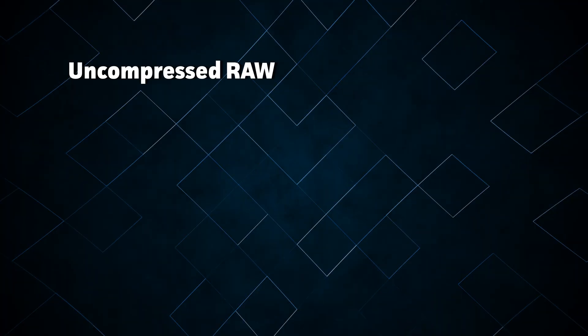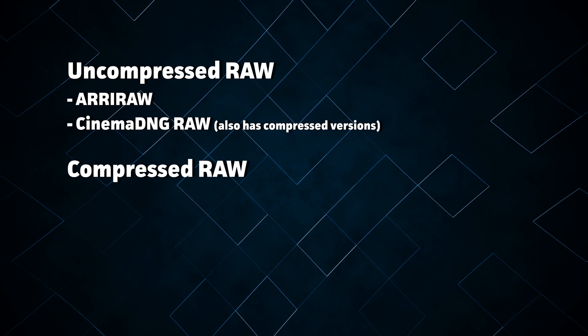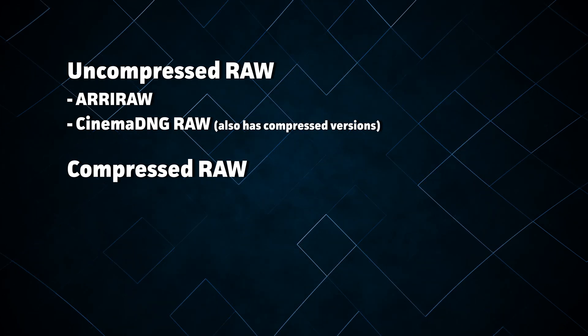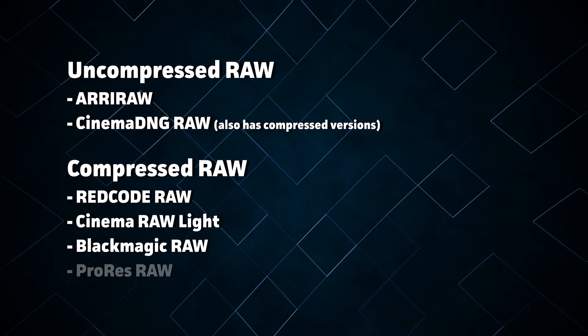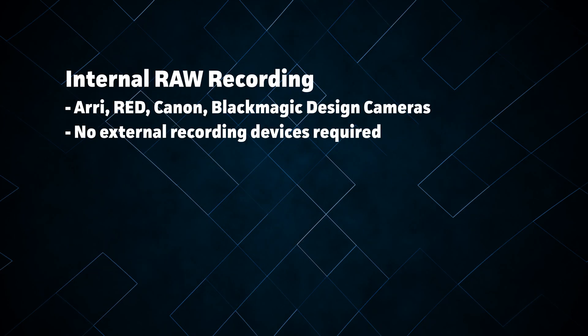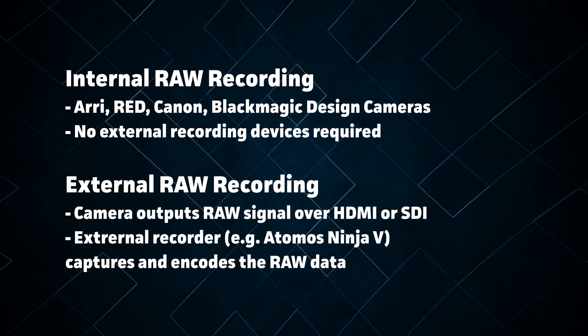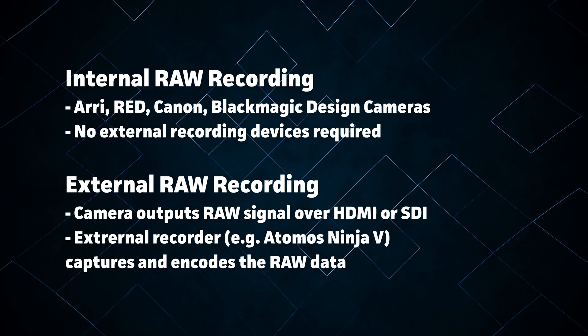The biggest difference between RAW photos and RAW video is how they're encoded. The simplest form of RAW video is just a folder filled with a bunch of RAW photos, but the industry has developed some video codecs that can much more efficiently store RAW video. Some RAW implementations are uncompressed, like Arri RAW and Cinema DNG RAW, while others compress the image without losing the ability to make corrections in post. REDCODE RAW, Cinema RAW Lite, Blackmagic RAW, and ProRes RAW all have slightly different implementations of compressed RAW. Some cameras can capture RAW internally, while others can output a RAW signal over HDMI or SDI but require an external recorder to actually capture it.